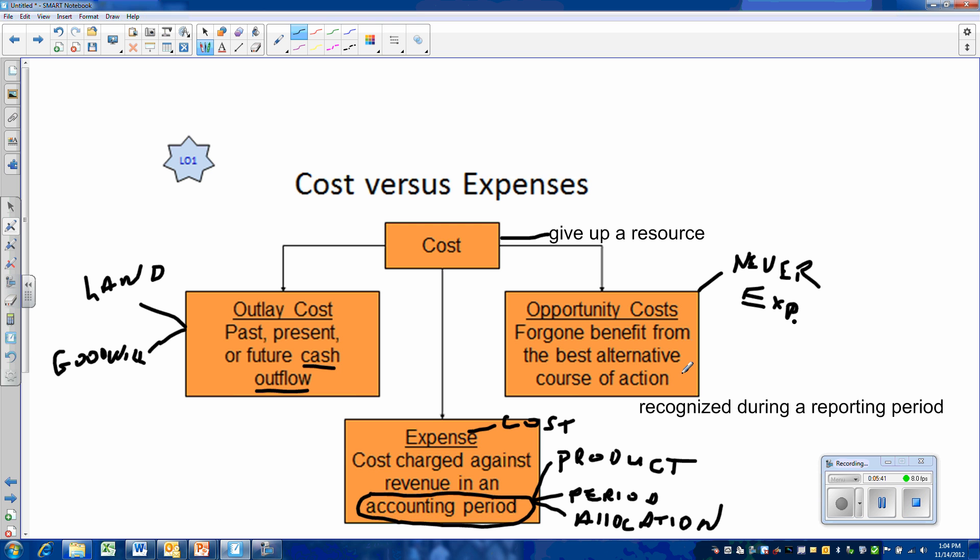For example, if you are thinking about expanding the plant and you choose to pay cash for that expansion and you're going to get the cash by selling some investments that are currently earning 5%, the interest that you're giving up on that investment is an opportunity cost. And it has to be considered when you're making the managerial decision. That's never going to be recognized as an expense.